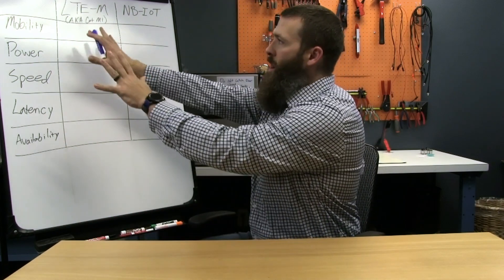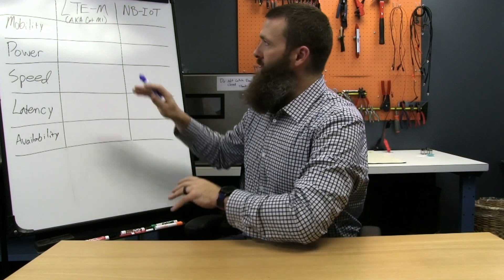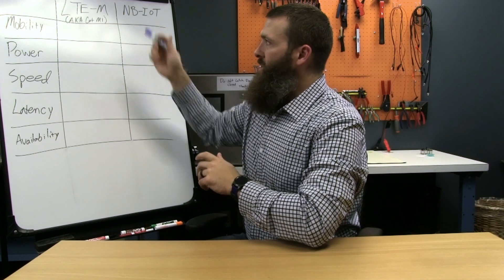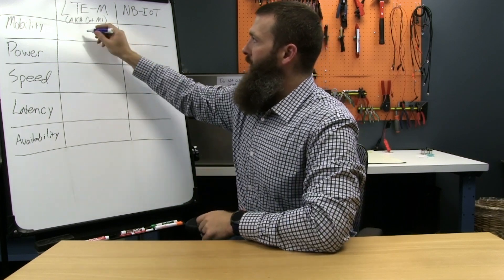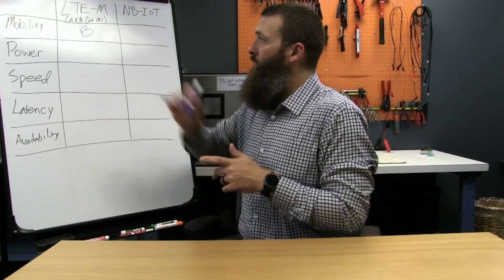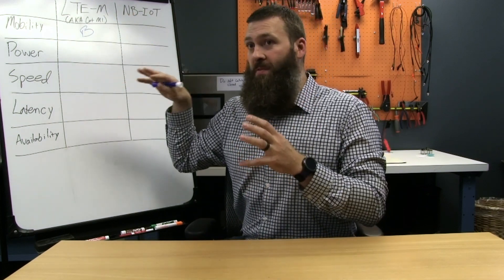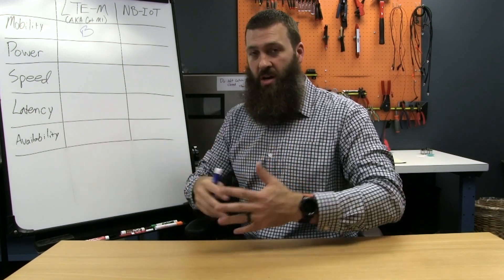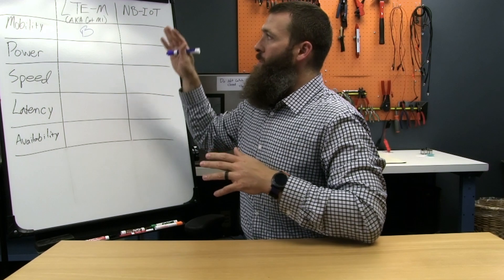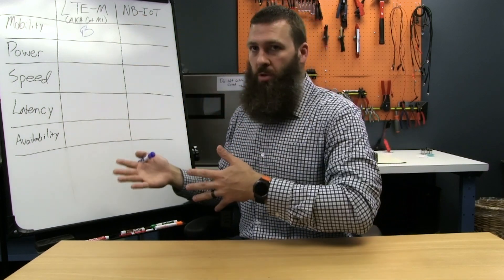Mobility is probably one of the main drivers for whether you use LTE-M or NB-IoT. LTE-M gets a B for mobility. I give it a B and not an A because LTE-M actually works better if it's not mobile. If it's stationary it's able to more quickly establish its connections. So it would actually prefer to be stationary, but it works quite well mobile as well.